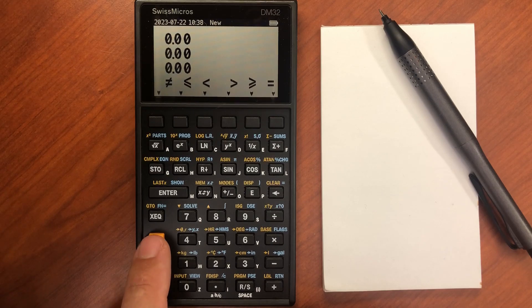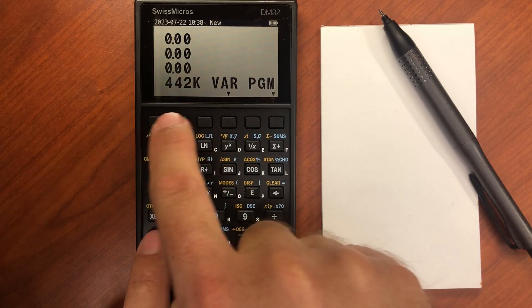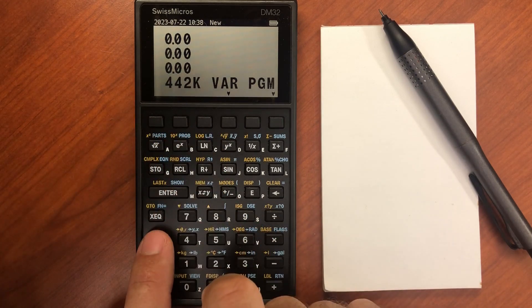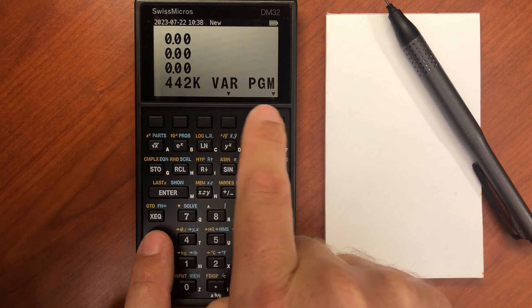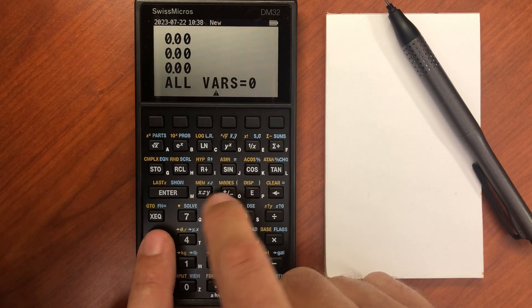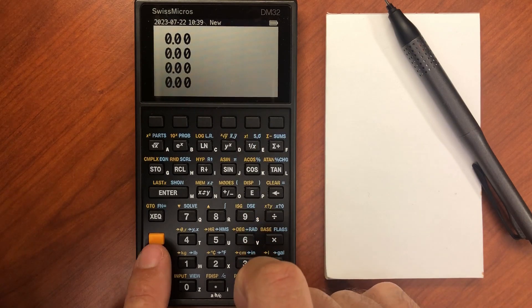And then we can go to the memory menu. That's gold shift up here. You can see this is how much memory we have available for programs. And then you can see your various variables and your programs. Right now I don't have any variables, and I don't have any programs. But that's where you would see those.